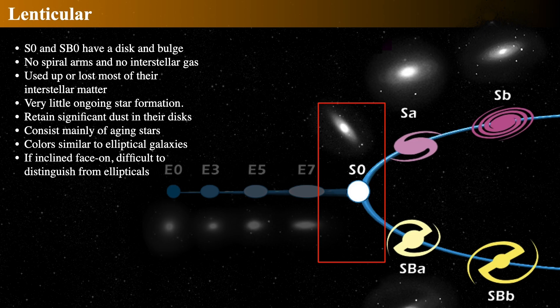This early-type nomenclature comes from Hubble's mistaken assertion that galaxies evolved from ellipticals to spirals. We just keep the name because it sounds better than calling them tuning-fork-handle galaxies or left-side-of-the-diagram galaxies.